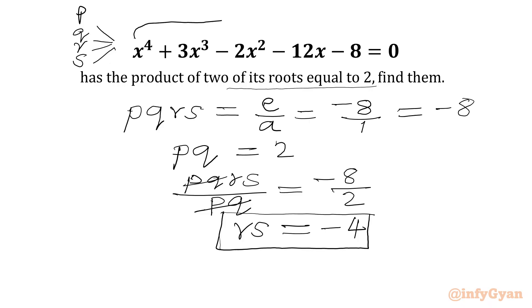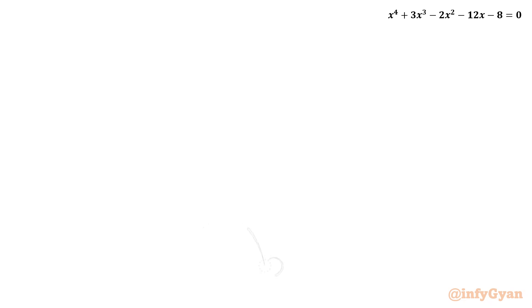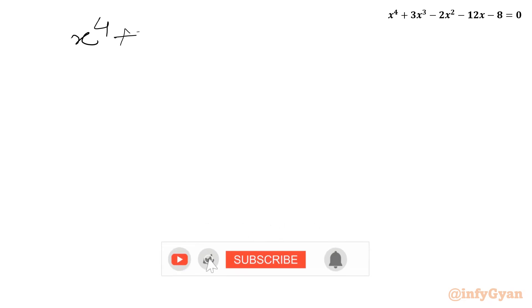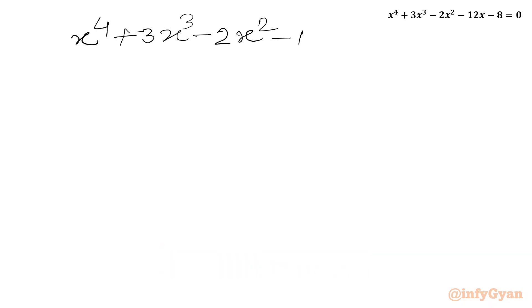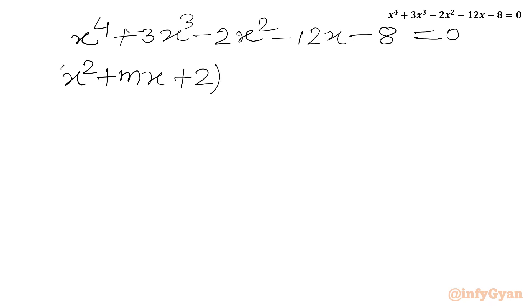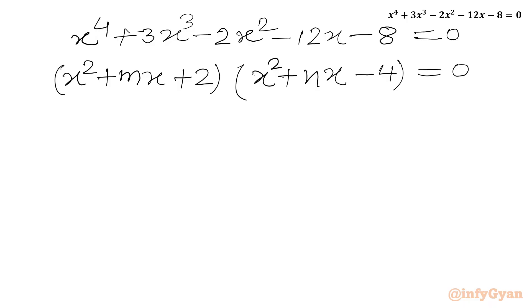We can think about this quartic expression as a product of two quadratics. Writing x⁴ + 3x³ − 2x² − 12x − 8 = 0, we factor it as (x² + Mx + 2)(x² + Nx − 4) = 0, where 2 is the product of roots P and Q, and minus 4 is the product of roots R and S.